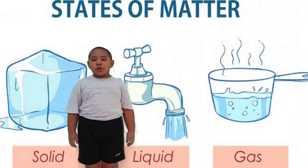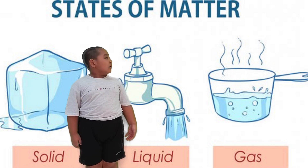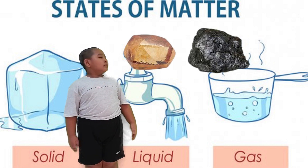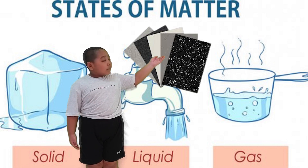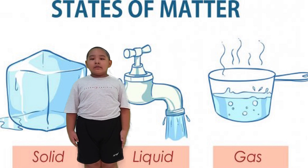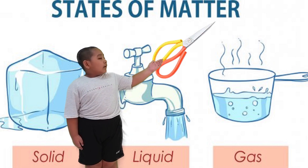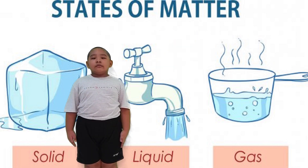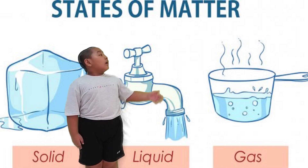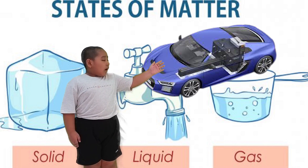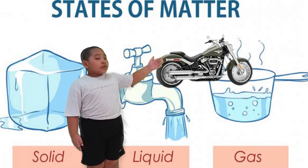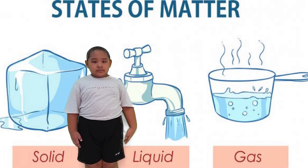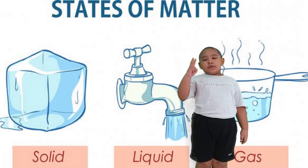Samples of solid are rock, paper, scissors, car, and motorcycle.